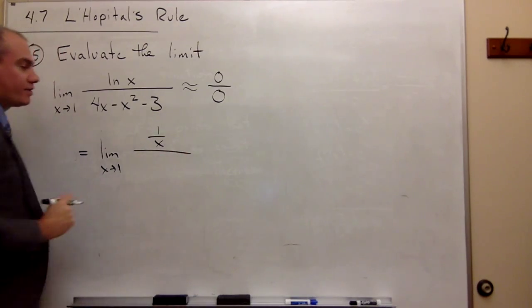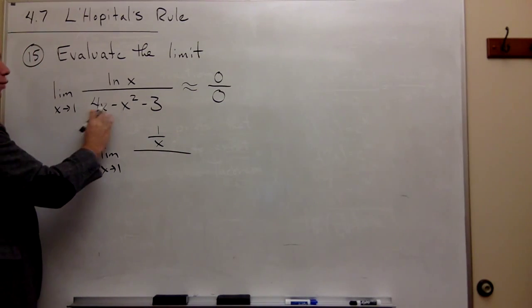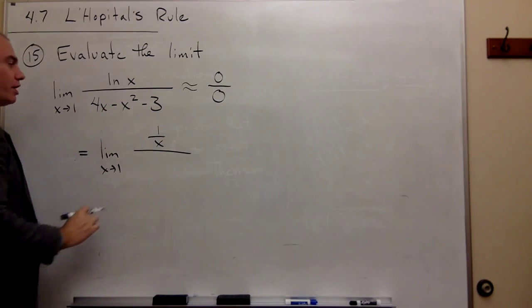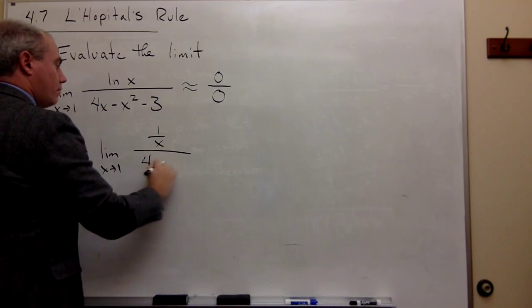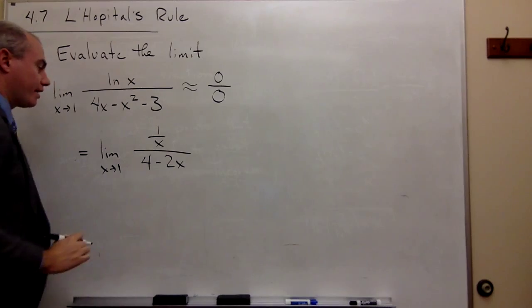So 1 over x will go on the top of the fraction. And the derivative of 4x minus x squared minus 3 is 4 minus 2x.